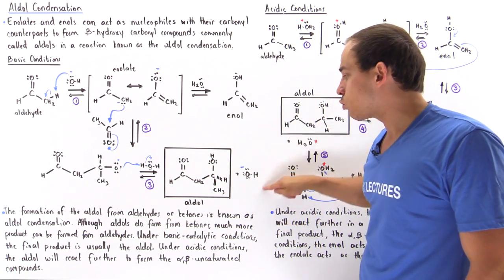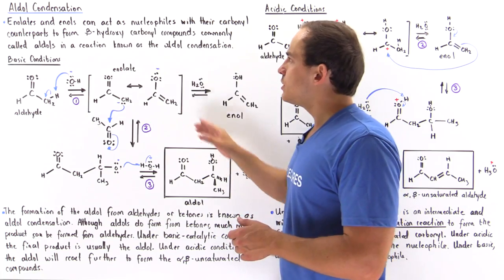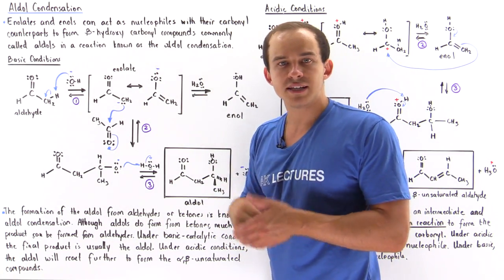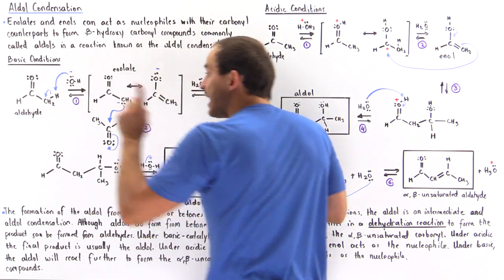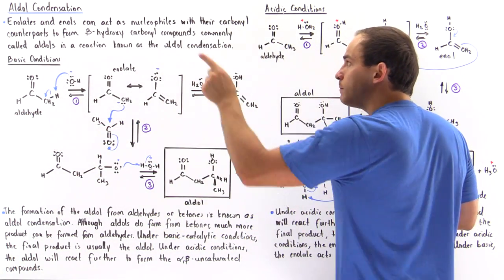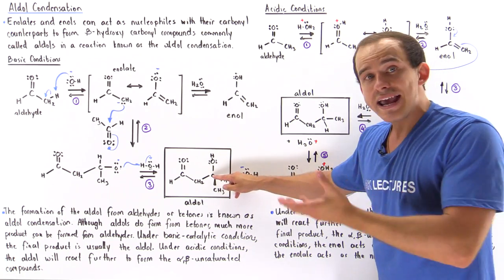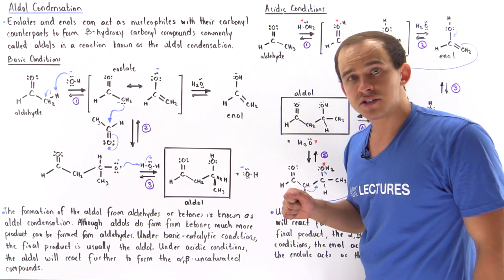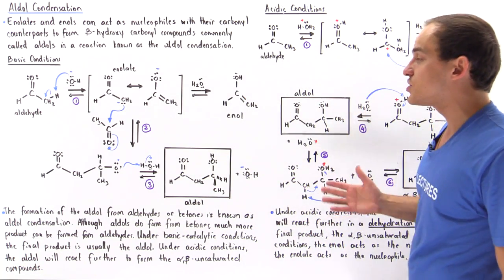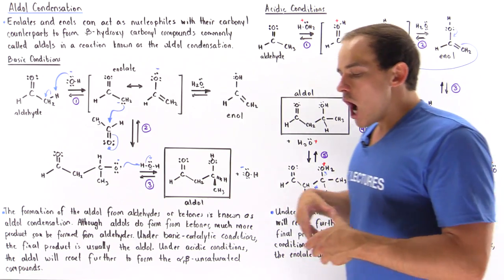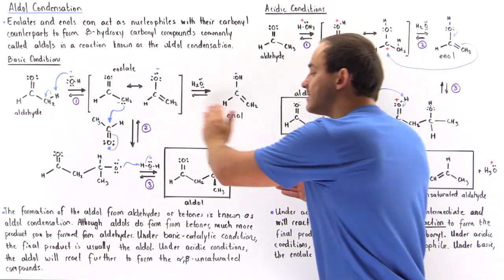In step three, we also regenerated our catalyst, the hydroxide molecule. The aldol is called beta-hydroxy aldehyde because we begin with an aldehyde — if this was a ketone, it would be called beta-hydroxy ketone. The beta-hydroxy term is because the beta-carbon of this carbonyl contains a hydroxy group. The first carbon after the carbonyl carbon is the alpha-carbon, and the next carbon across is the beta-carbon. So under basic conditions, if we use either the ketone or our aldehyde, our final product is our aldol.